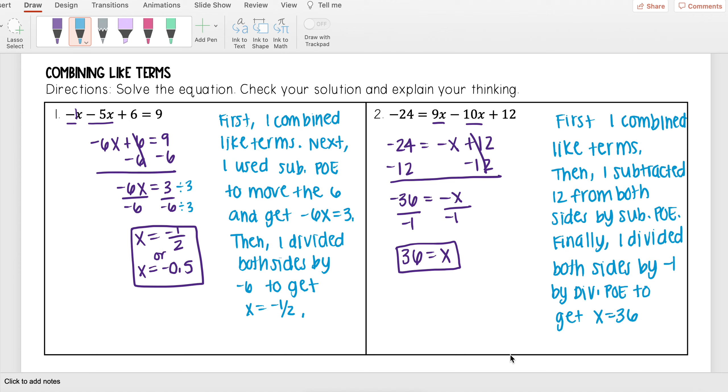I first combined like terms to get negative x plus 12 on the right hand side because 9x minus 10x gives me negative x. I then subtracted 12 from both sides to get negative 36 equal to negative x. And then here to get rid of that negative sign in front of your x, remember that's really a negative 1 that's in front of your x here. So I divided both sides by negative 1 to get x is equal to 36.